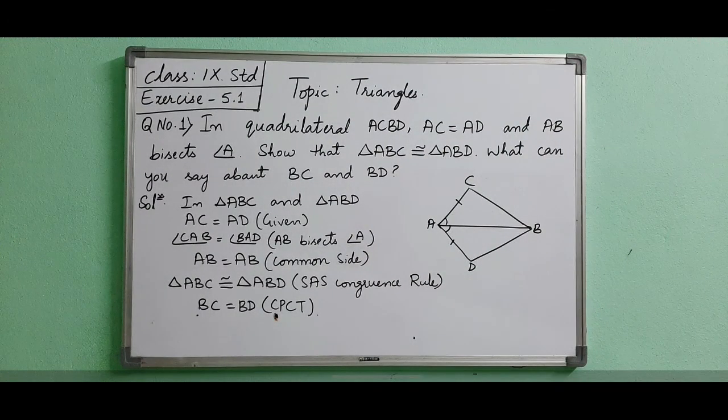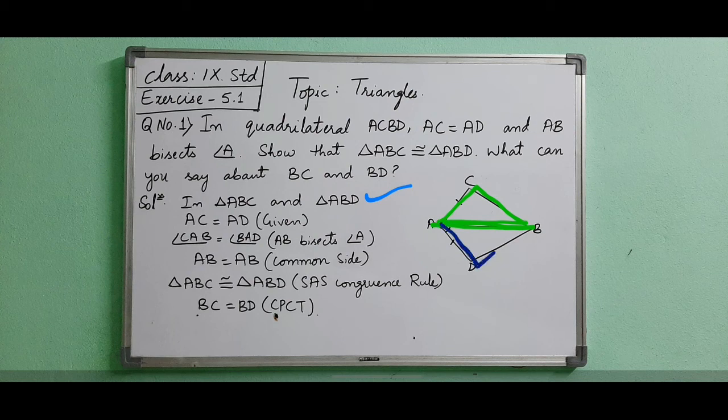Now let's see the stepwise solution. The two triangles are triangle ABC and triangle ABD.